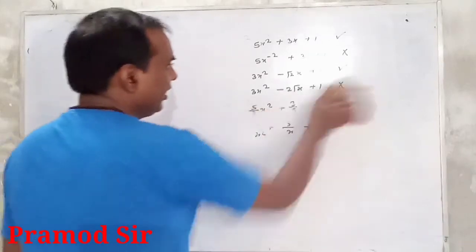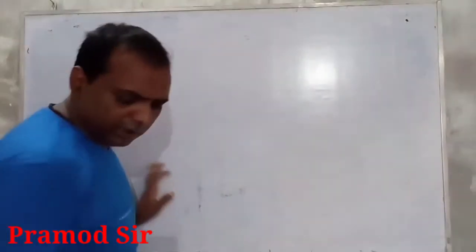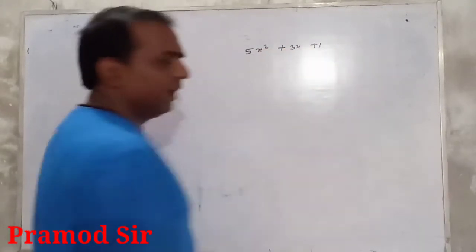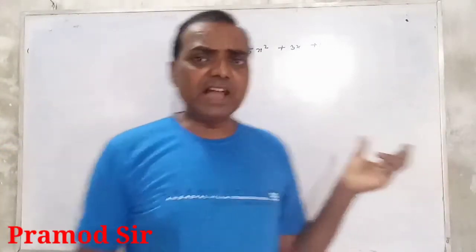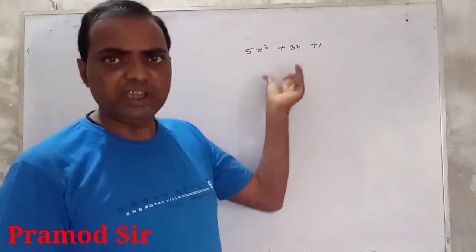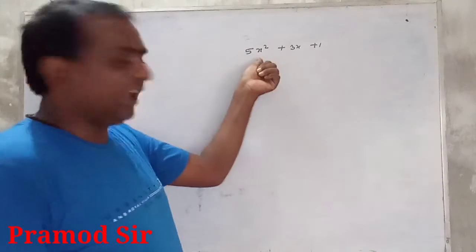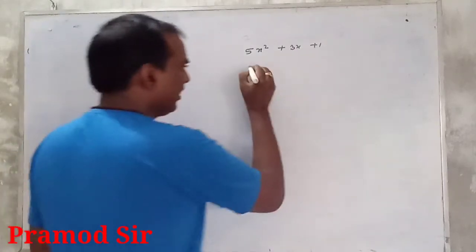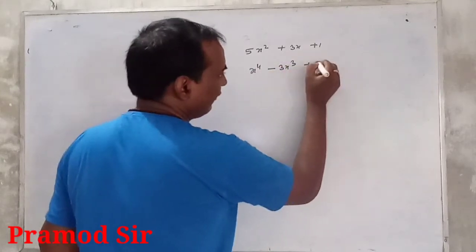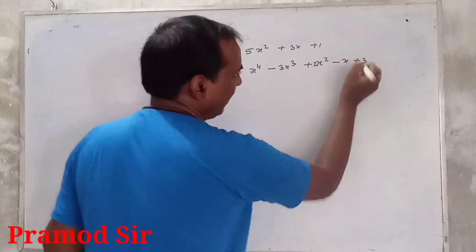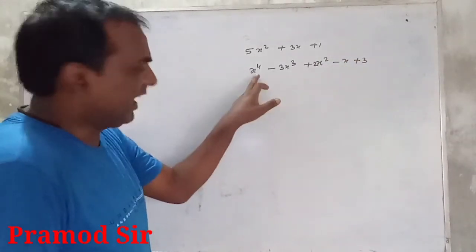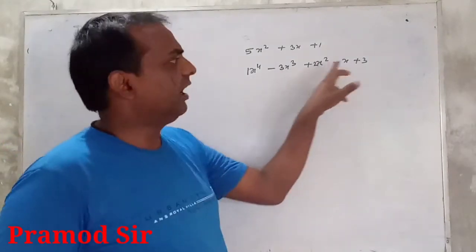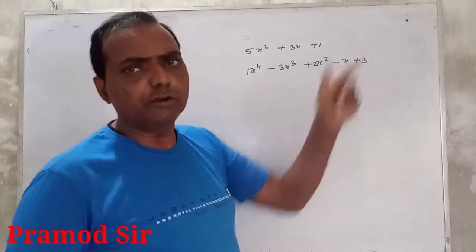Now, for the polynomial 5x² + 3x + 1, it has three terms. The coefficient of x² is 5, and the coefficient of x is 3. Similarly, in x⁴ − 3x³ + 2x² − x + 3: the coefficient of x⁴ is 1, coefficient of x³ is −3, coefficient of x² is 2, coefficient of x is −1, and 3 is the constant.